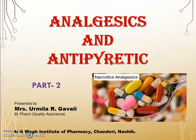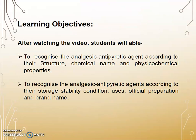Now in Part 2, we will deal with the monograph of all the analgesic and antipyretic drugs. After watching this video, students will be able to recognize analgesic antipyretic agents according to their structure, chemical name, and physiological property — as well as according to their dosage, storage condition, usage, official preparations, and brand names.